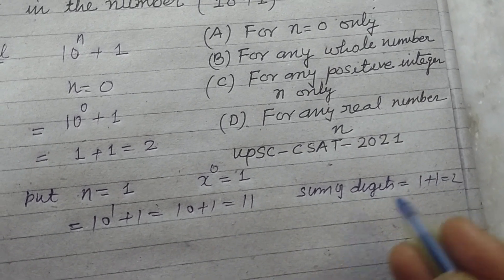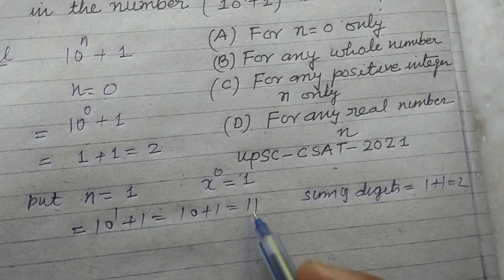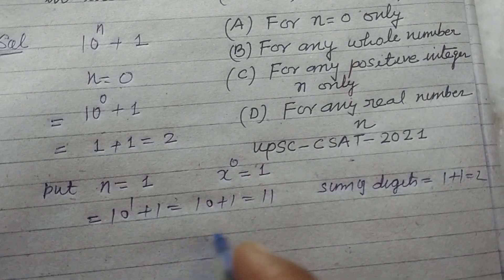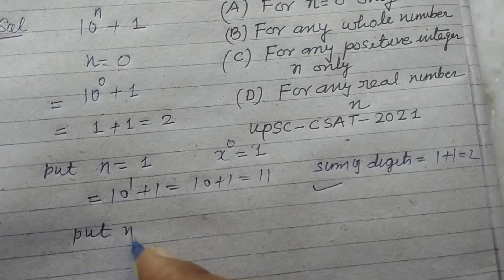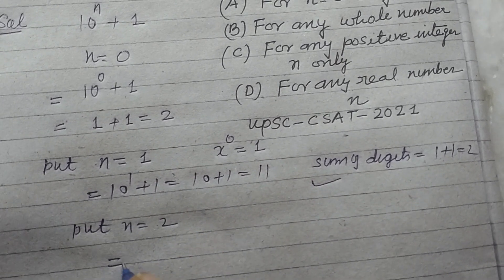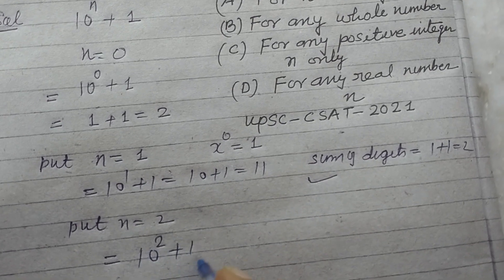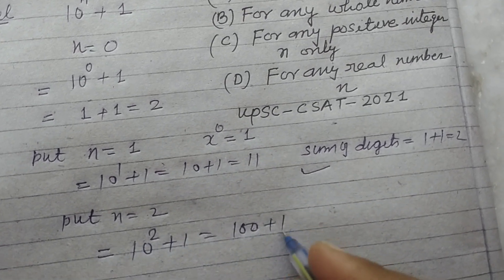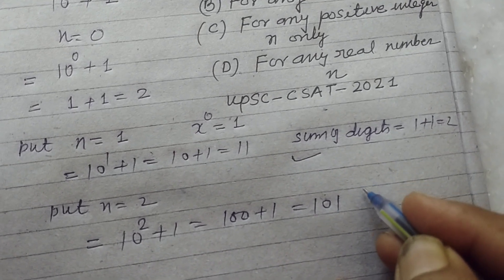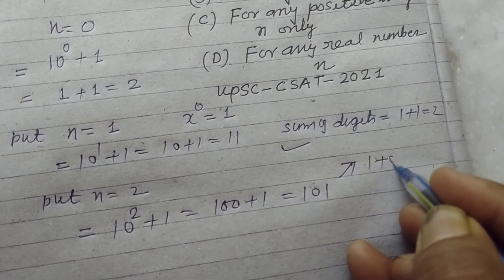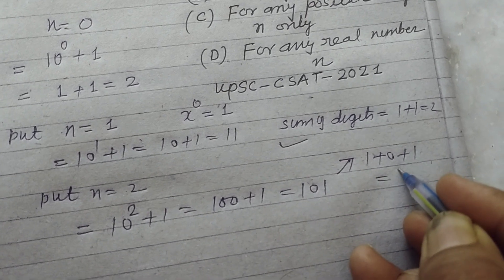The question asks that the sum of digits should be 2. So yes, this also satisfies. Put n = 2: 10^2 + 1 = 100 + 1 = 101. When we add the digits, 1 + 0 + 1 = 2.